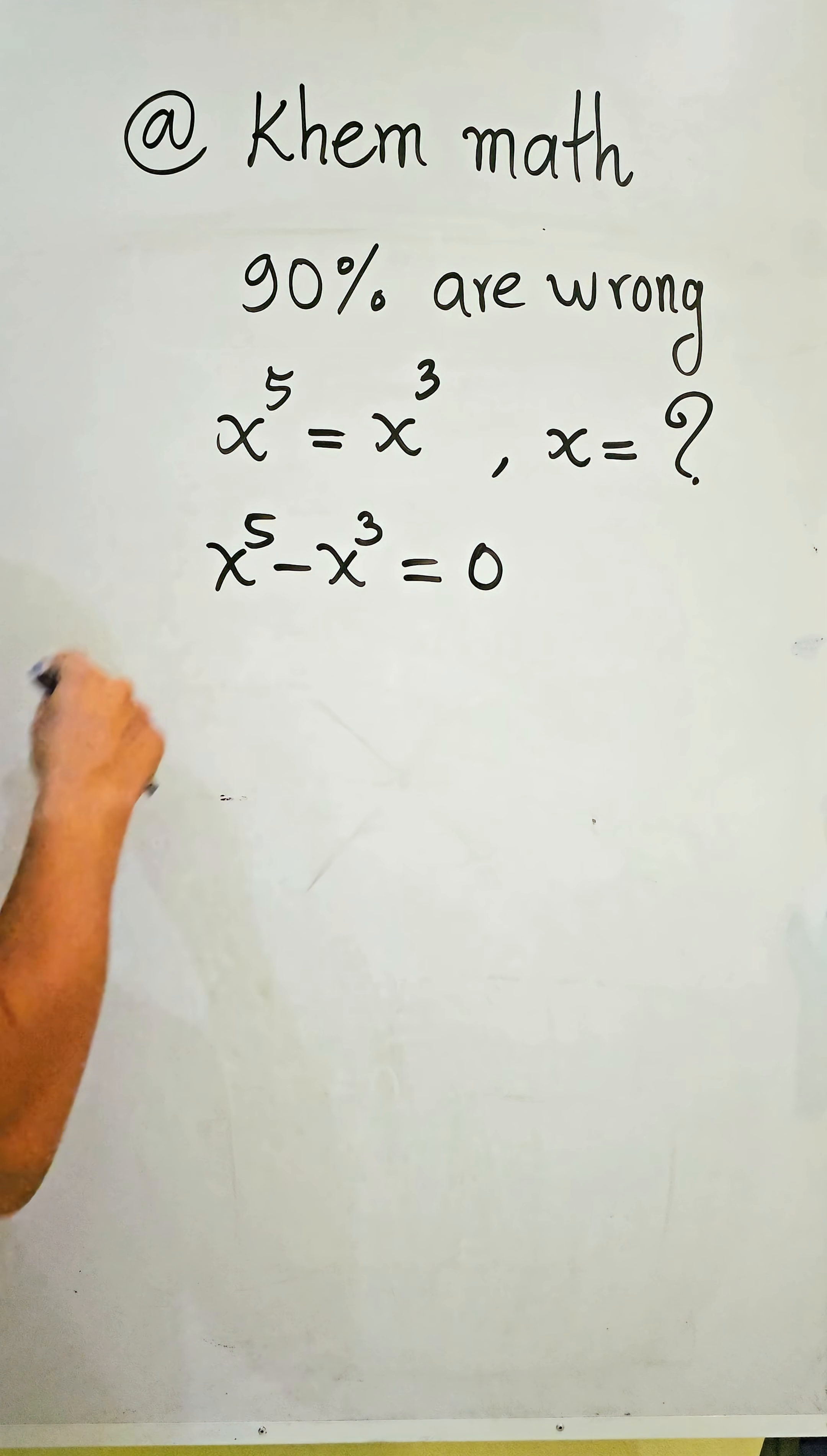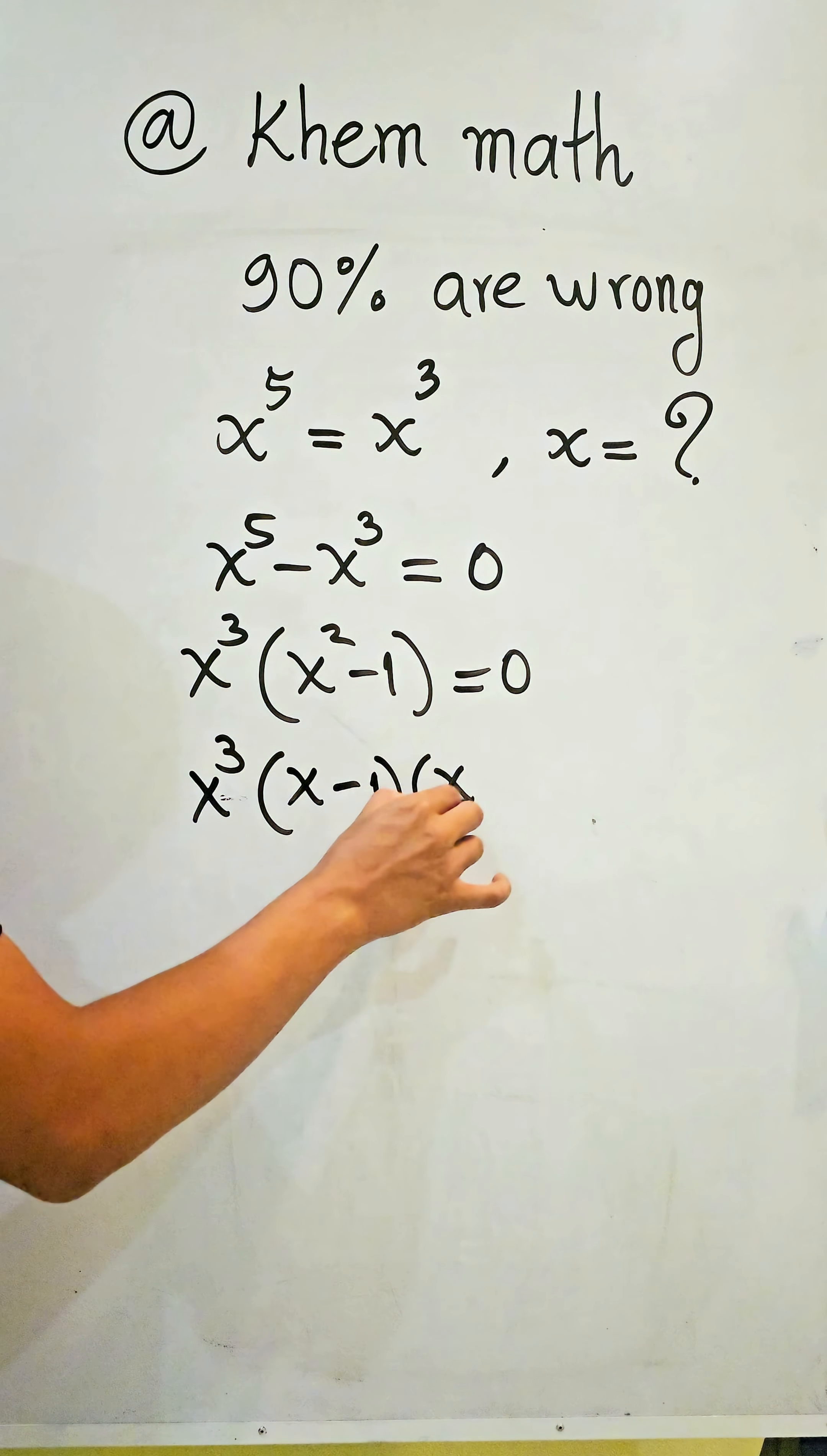Then we take x^3 as a common factor, so we get x^3 times x^2 minus 1 equals zero. Then we get x^3 times x minus 1 times x plus 1 equals zero.